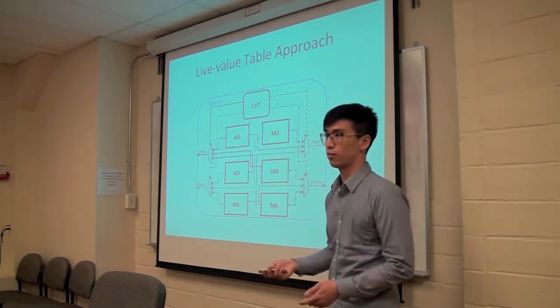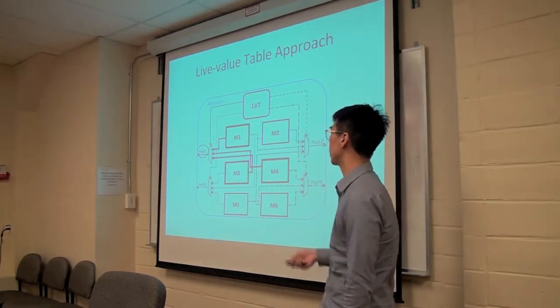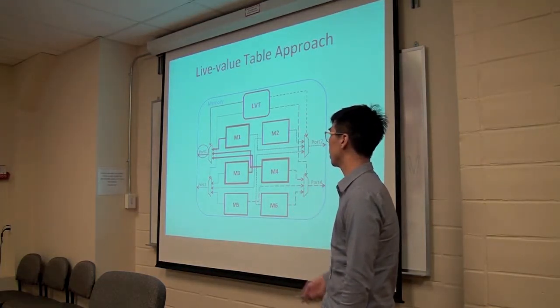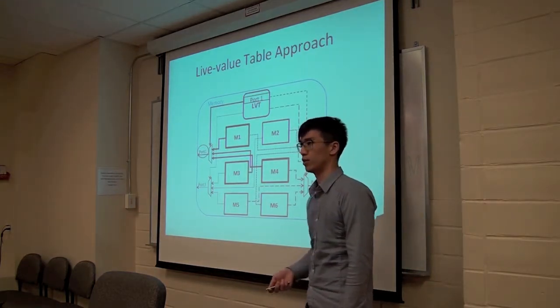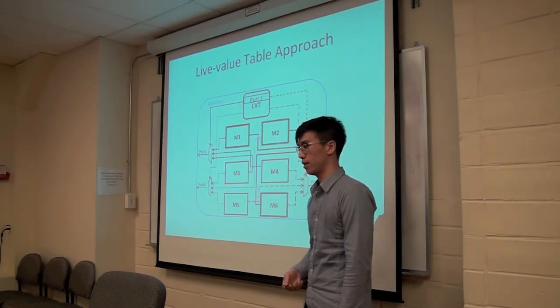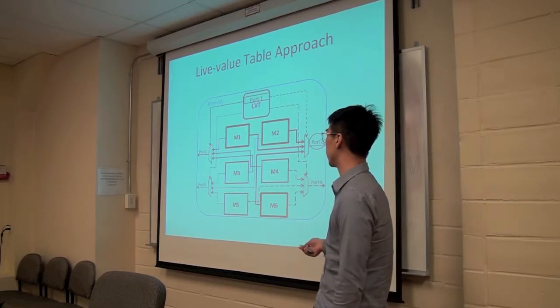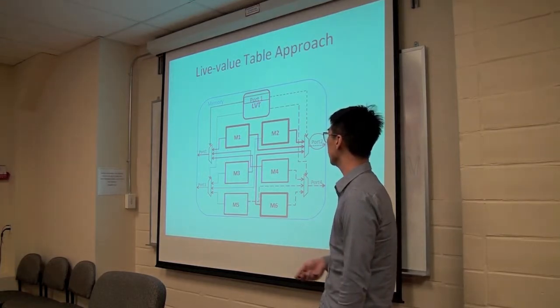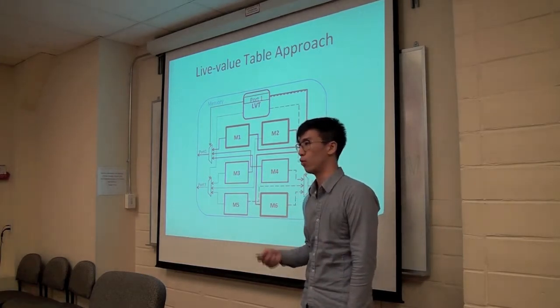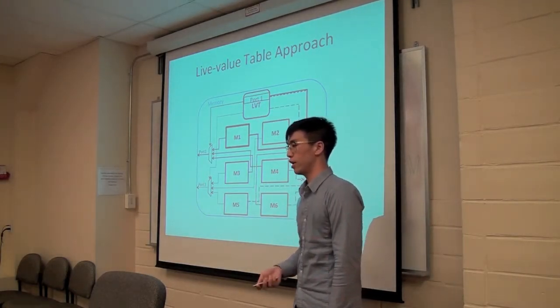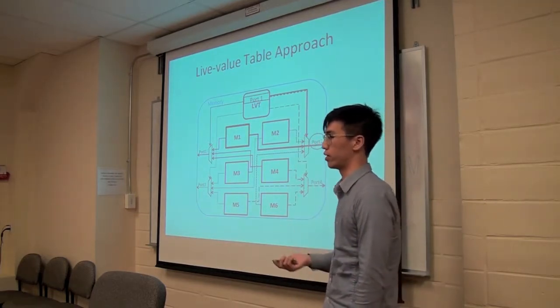So the operation itself is very similar to the original work. Whenever you do a write, let's say port 1 wants to do a write, it will write to all the memory blocks that it's connected to and it will write to the live value table that for that given address port 1 is the most recent writer. Now let's say port 2 later wants to read from the same memory address, it will read from all the memories that it's connected to and it will look up that address in the live value table which will tell that port 1 is the most recent writer. So it will take the data that is from the memory that is shared with port 1 which is M1 in this case.